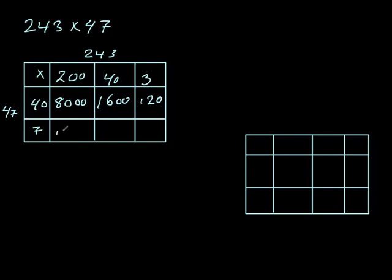7 times 2, sorry, that makes 14. But because I'm multiplying 7 by 200, so it's 1400. So 7 times 4 is 28 with a 0 because it's 40, making 280. And 7 times 3 is 21.